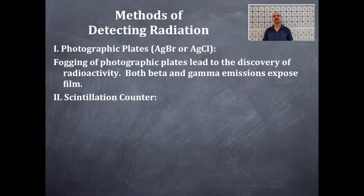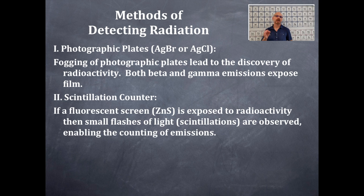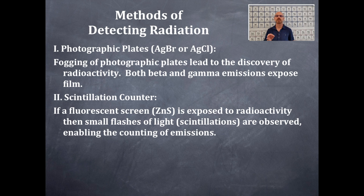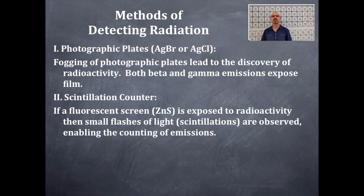Number two is a scintillation counter. If a fluorescent screen like zinc sulfide is exposed to radioactivity, small flashes of light — those are scintillations — are observed, enabling the counting of emissions. This is one method of detecting very low levels of radioactivity that are really hard to detect with something like a Geiger counter. You do what's called a swipe test, put that into a scintillation vial with scintillation fluid, place it into a scintillation counter machine, and it will count the number of counts for you automatically.